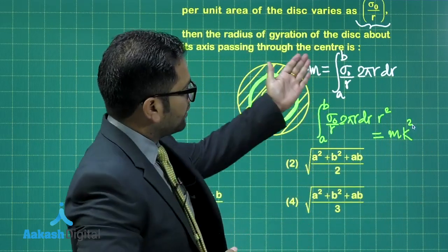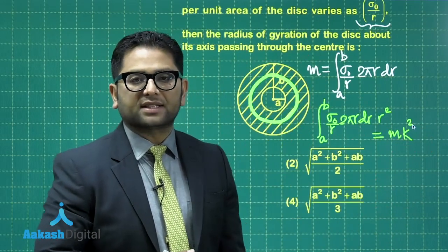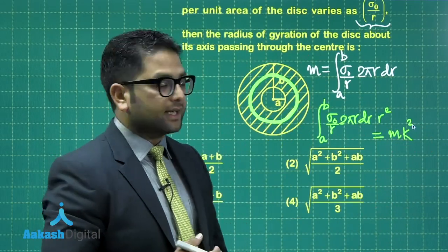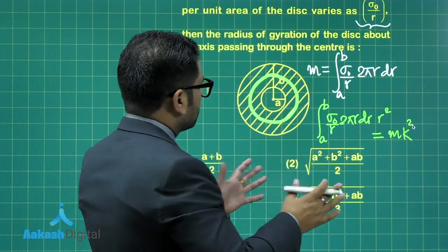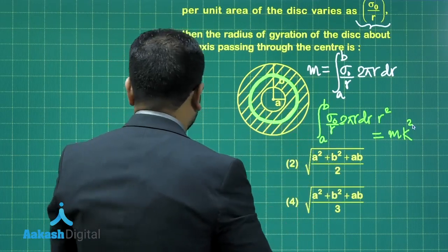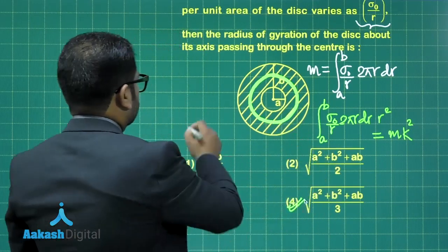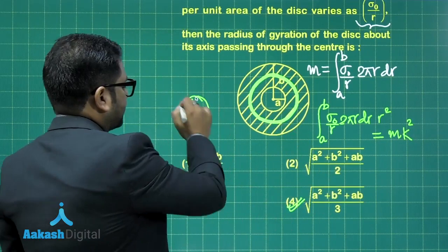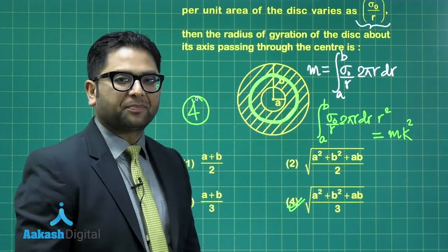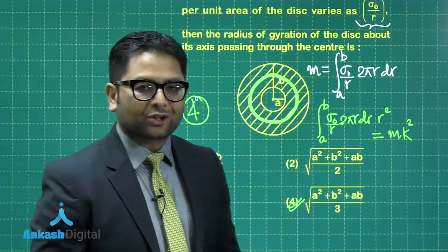m is the mass, which you can bring it from here. k is the radius of gyration, which is the required thing. You do that, a simple level of integration, you would land up to option number 4 as the correct answer. Fine. Now let's move to the next question.